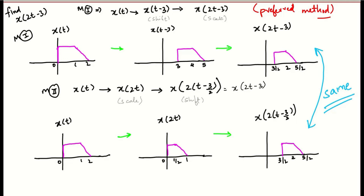Now let's look at the graph. x(t) is this. If you shift it by 3 units, this graph is plotted. And then if you scale it by 2 units — that is t/alpha, alpha is 1/2 — the entire time axis is getting divided by 2. This is the final answer for method 1.